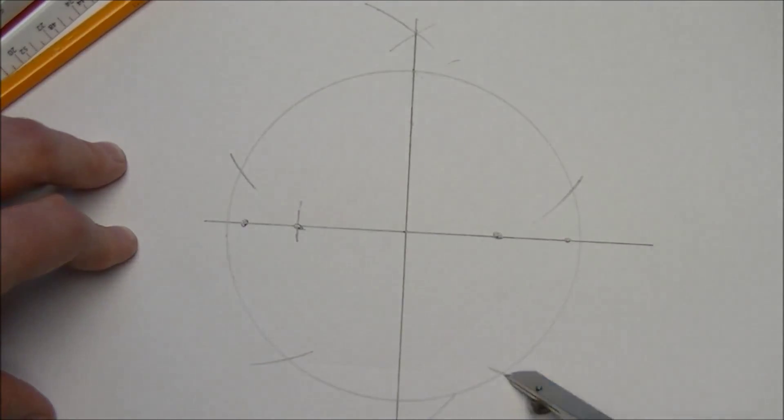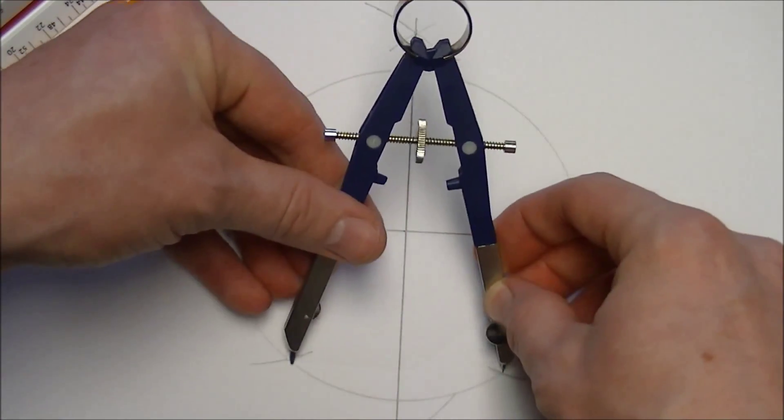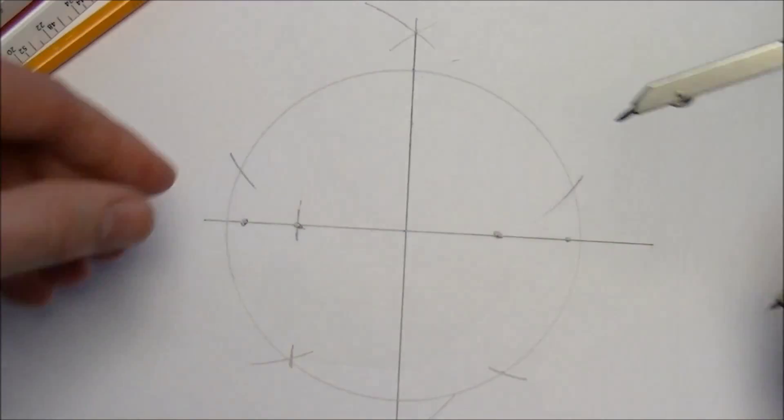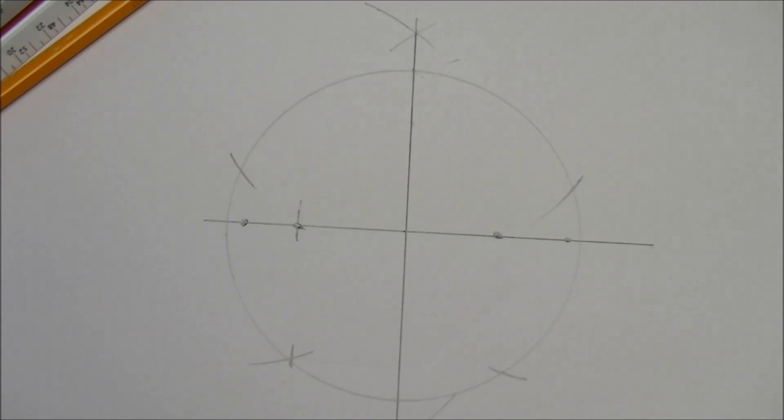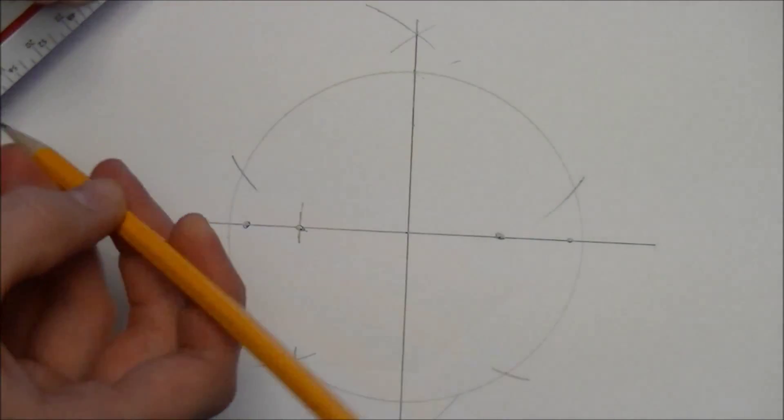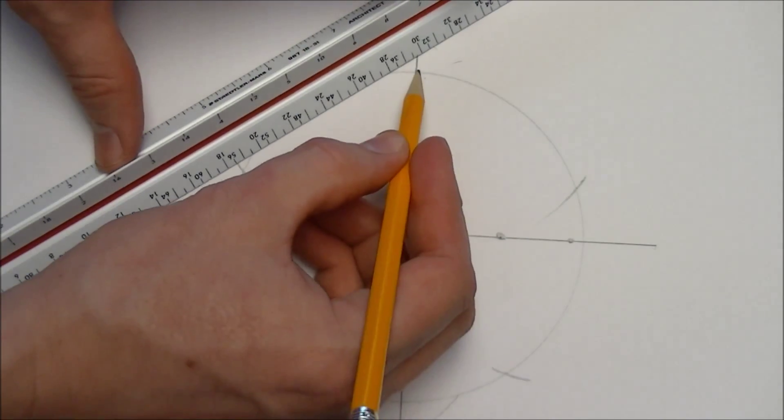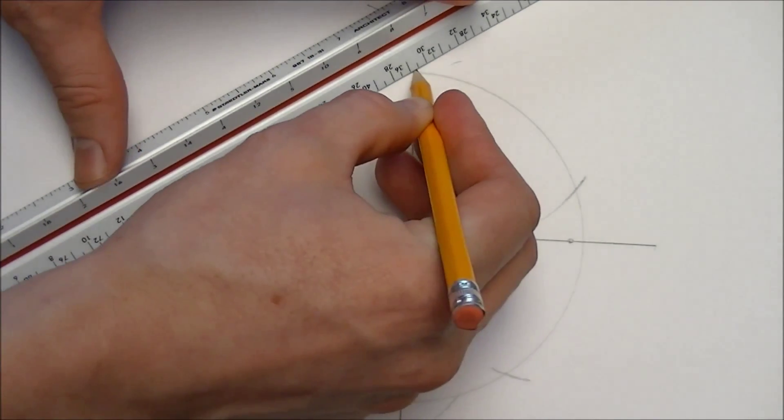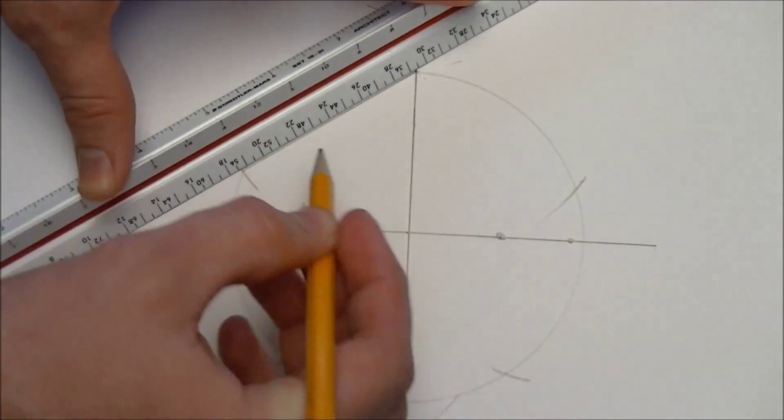We could also have measured from here to there, they should be the same distance. That's giving us our points around the outside of this circle, that will give us our regular pentagon.